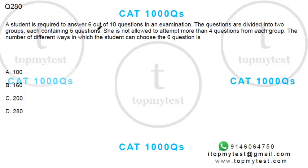A student is required to answer 6 out of 10 questions in an exam. The questions are divided into 2 groups, each containing 5 questions. So first group, second group, you have 5 questions in each.